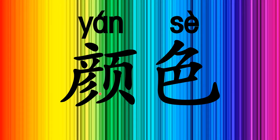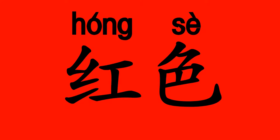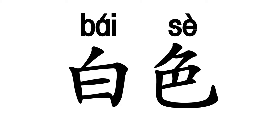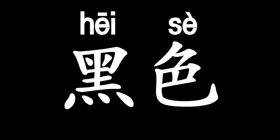颜色 means 'color'. To answer 哪 questions, we sometimes have to describe things by color. 红色 is red, 绿色 is green, 黄色 is yellow, 蓝色 is blue, 白色 is white, and 黑色 is black.